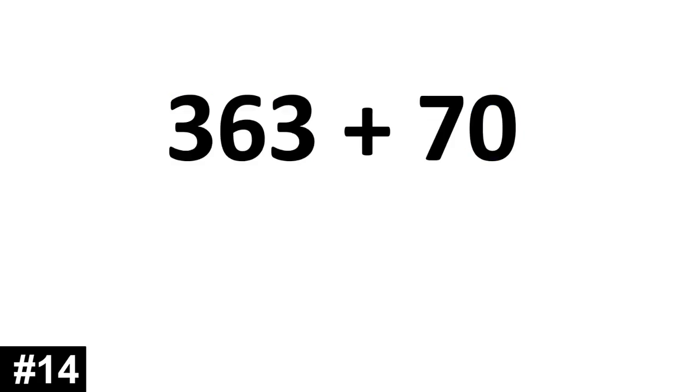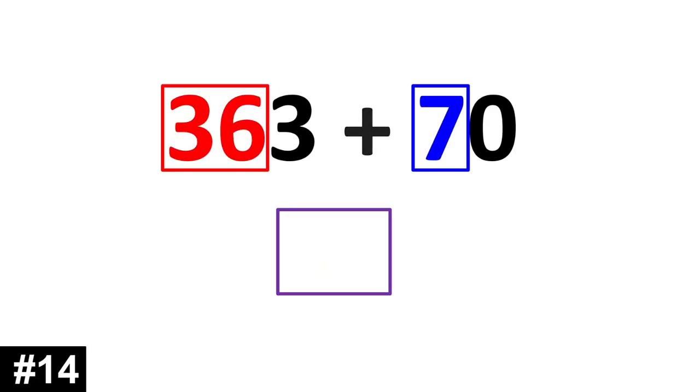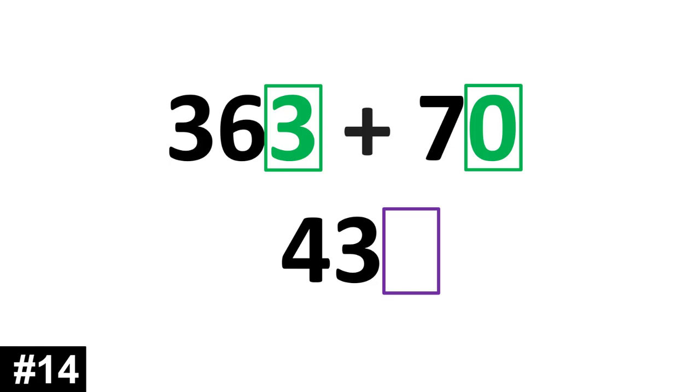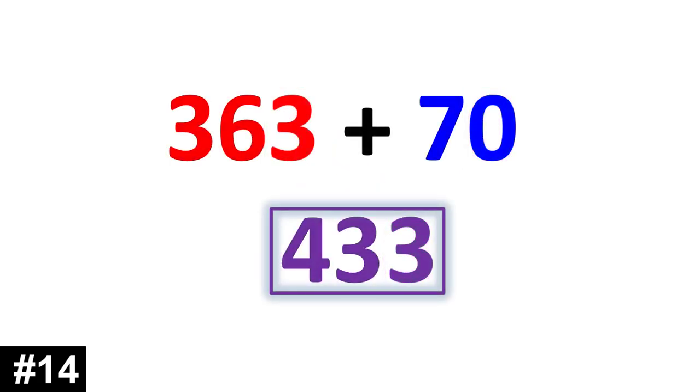363 plus 70. 36 tens plus 7 tens. 36 plus 7 is 43. We look to the ones. 3 plus 0 is 3. 433.